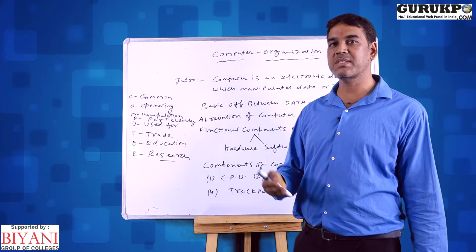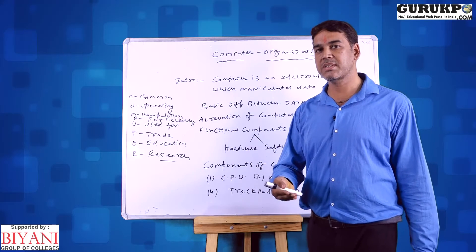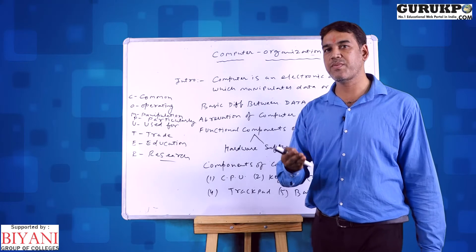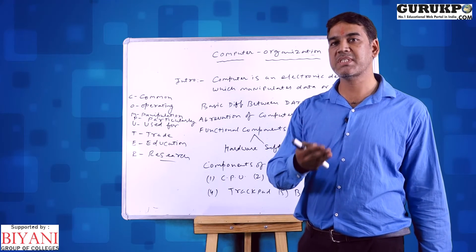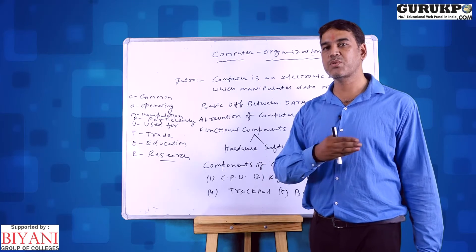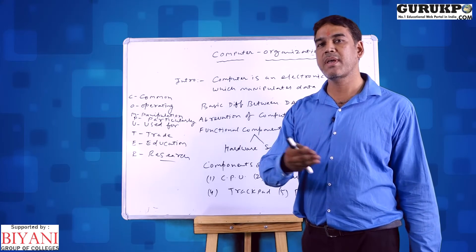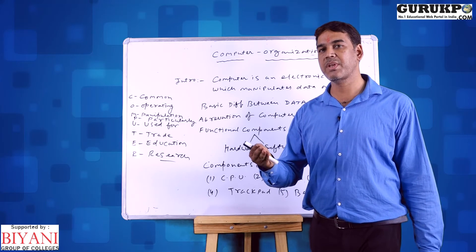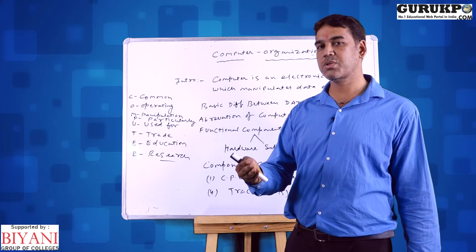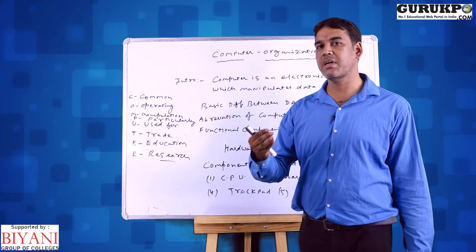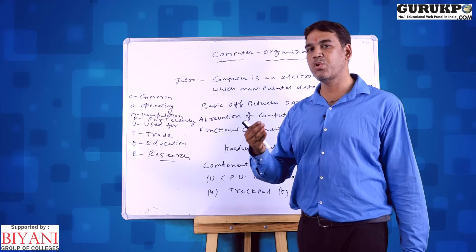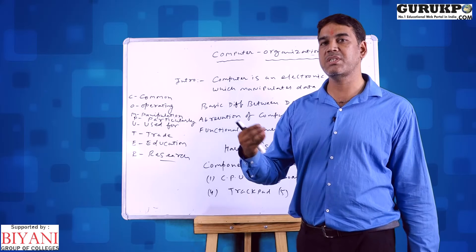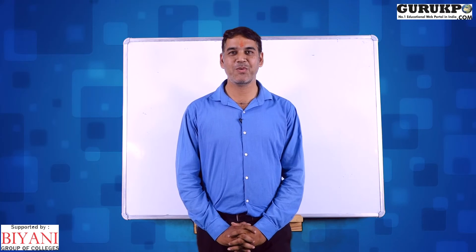Examples of operating systems are Windows and Linux. For application software, we have MS Word, MS Excel, and Tally — these kinds of software are called application software. Another type is utility software, which provides additional facility to the computer. For example, if I just want to see the time on the system, utility software will be used for that. Thanks for watching my video.